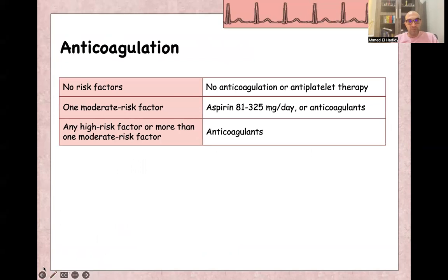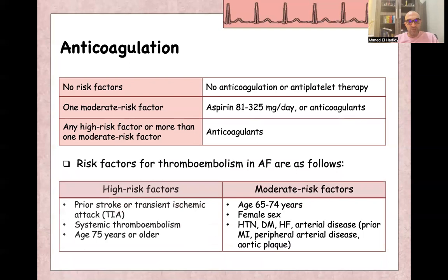Anticoagulation is guided by risk factors. If there are no risk factors, no anticoagulation or antiplatelet is needed. If there is one moderate risk factor, you can give either aspirin or anticoagulation. If there is any one high risk factor or more than two moderate risk factors, anticoagulants are required. High risk factors include prior stroke or TIA, systemic thromboembolism, and age 75 or more. Moderate risk factors include age 65–74, female sex, hypertension, diabetes, heart failure, or arterial disease like myocardial infarction, peripheral arterial disease, or aortic plaque. One moderate risk factor means antiplatelet or anticoagulant; more than one mandates anticoagulation.